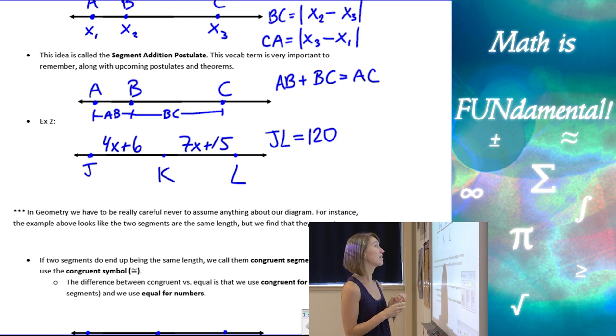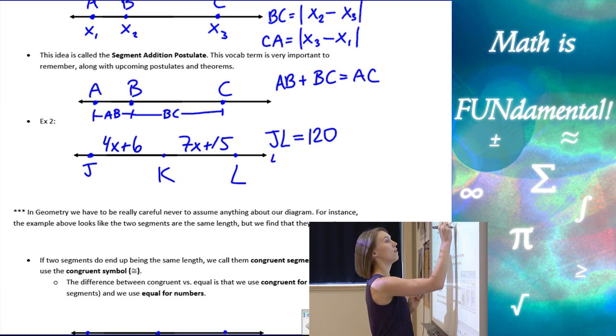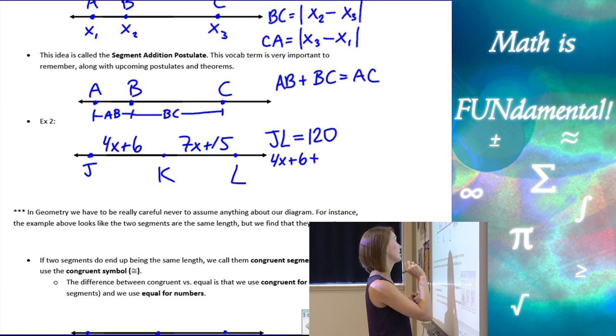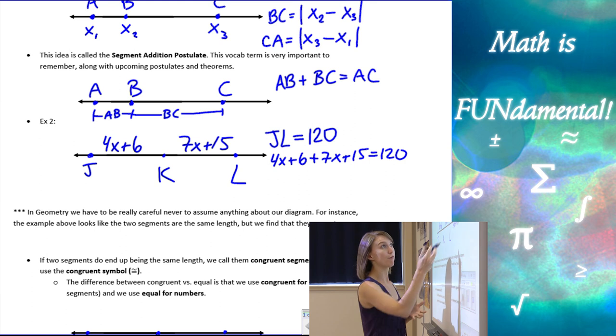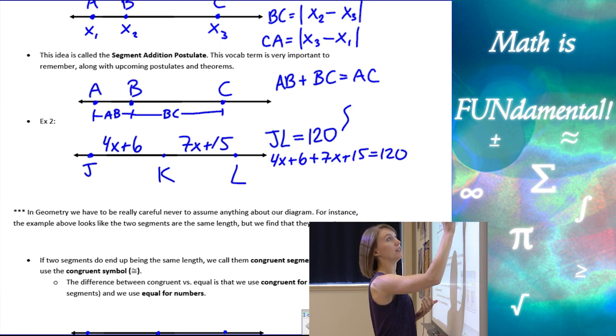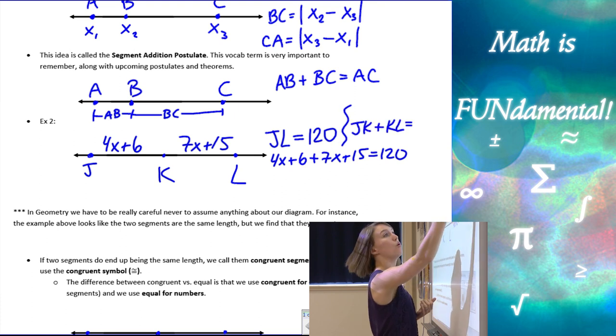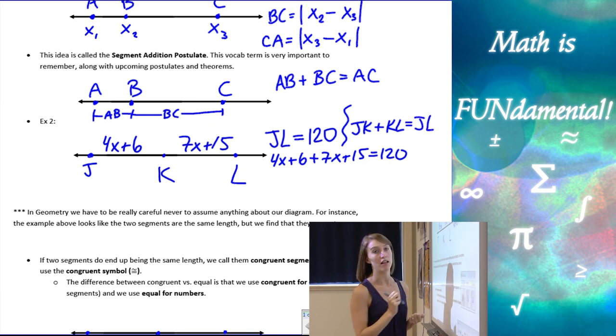Alright, if we know that the length of JL is 120, and I use my segment addition postulate, I'm going to make an equation 4X plus 6, which is JK, plus 7X plus 15 equals 120. So again, if we look at that, I'll just make a little divider there. I know that JK plus KL has to give me that whole segment JL. So that's what I'm using here to make my equation. And then we can combine like terms and solve for X.